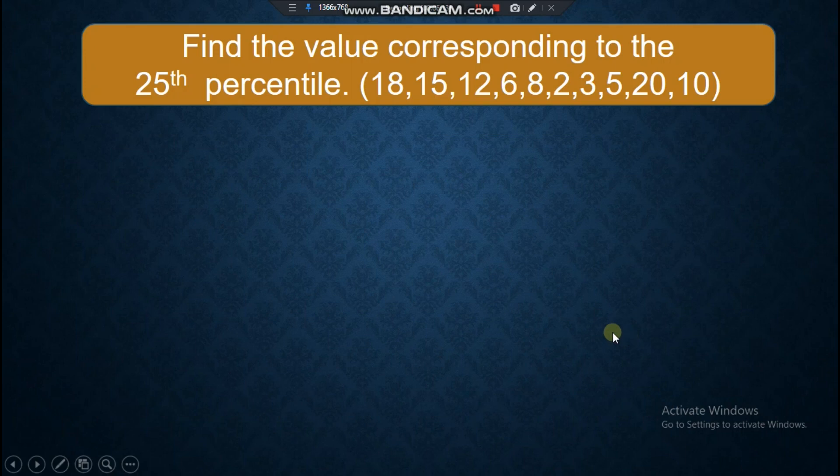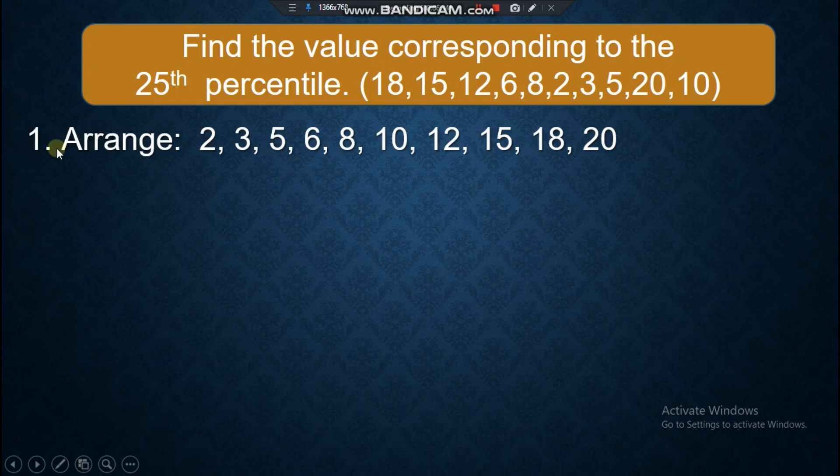Let's have another problem. Find a value corresponding to the 25th percentile. In our previous example, given the score, we need to find the percentile rank. Now in this case, given the percentile rank, we need to identify the score. So it's the reverse. First, you arrange the data. As you can see, we have already arranged the data lowest to the highest data.